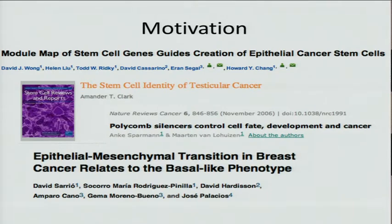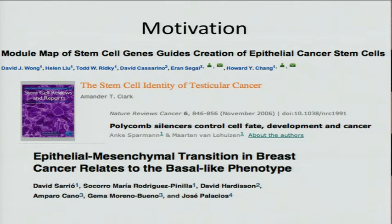If you look at cancer as a disease of pathways rather than single mutations, this makes sense, because you want to program this robust cancer that can co-opt and induces proliferation. So it's no surprise that it has chosen embryonic stem cells. We're also actively looking for more of these programs and want to develop a method that can detect this.